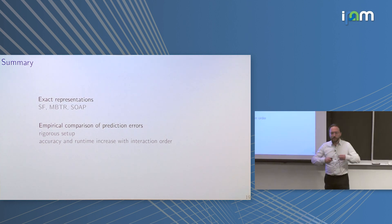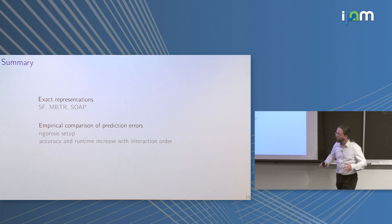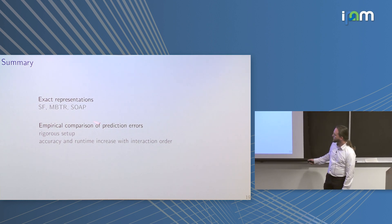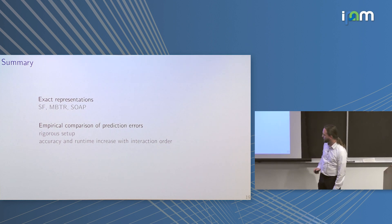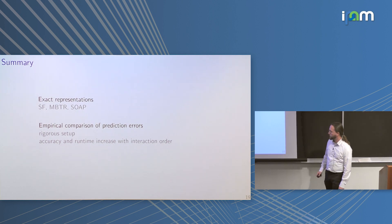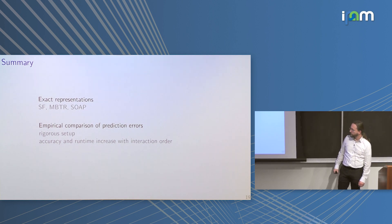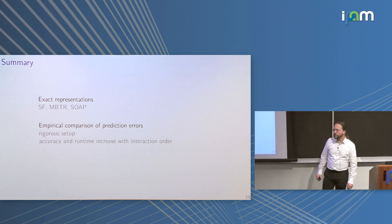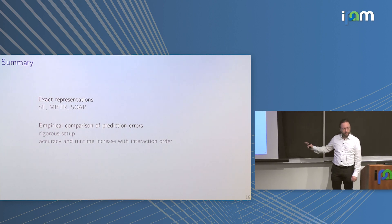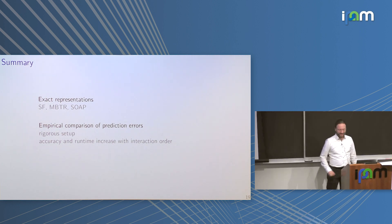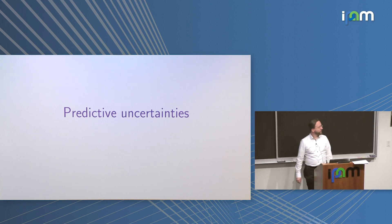To summarize the first part: I discussed creating surrogate models for atomistic numerical simulations, showed three state-of-the-art representations, and explained how we do rigorous benchmarking. The main result is that both accuracy and runtime increase with the modeled interaction order. Let's move on to the second part: predictive uncertainties.